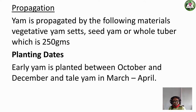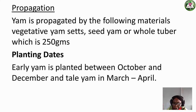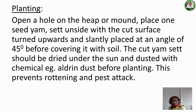Planting dates: early yam is planted between October and December. Then there is late yam, which can be planted later in the year. When planting, you open the ground or make a hole on the mound, place the yam inside with the cut side facing upward — not upside down. You plant it slightly slanted, not straight down.